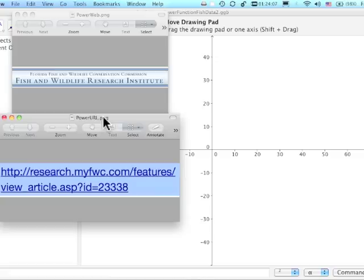We are about to do a data quest and then move the data into GeoGebra and do a power regression. The website where the data was gathered from is the Fish and Wildlife Research Institute, and here is the URL.